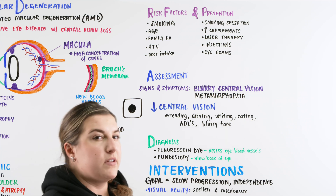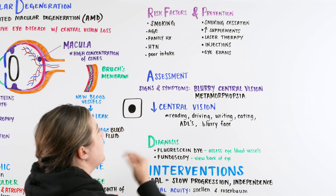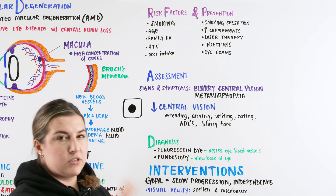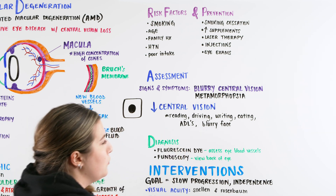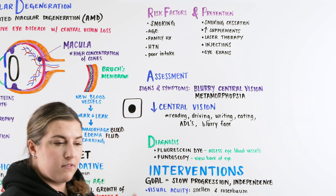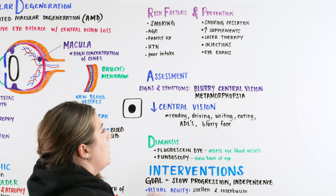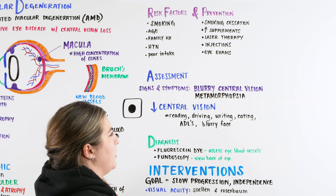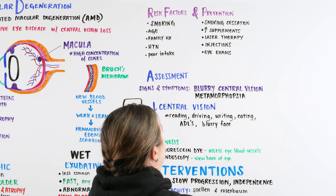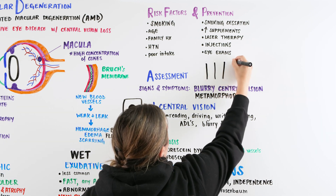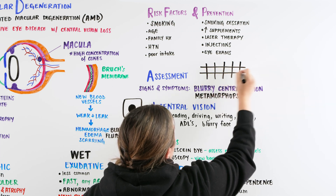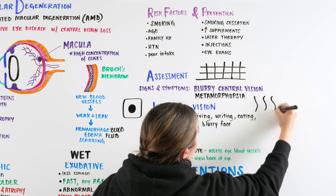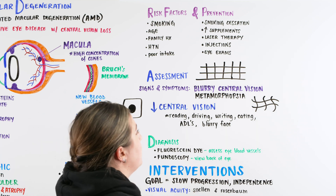When assessing our patient, the two biggest signs and symptoms are blurry central vision — right in the middle — which causes issues with reading, driving, writing, eating, and activities of daily living, including recognizing faces. There's also a very big indicator called metamorphopsia. This is assessed using the Amsler chart, which looks like grid paper. Metamorphopsia means distortion — the grid lines that should appear straight instead look bent, warped, or distorted. So the patient is having trouble with central vision and is also experiencing this visual distortion.